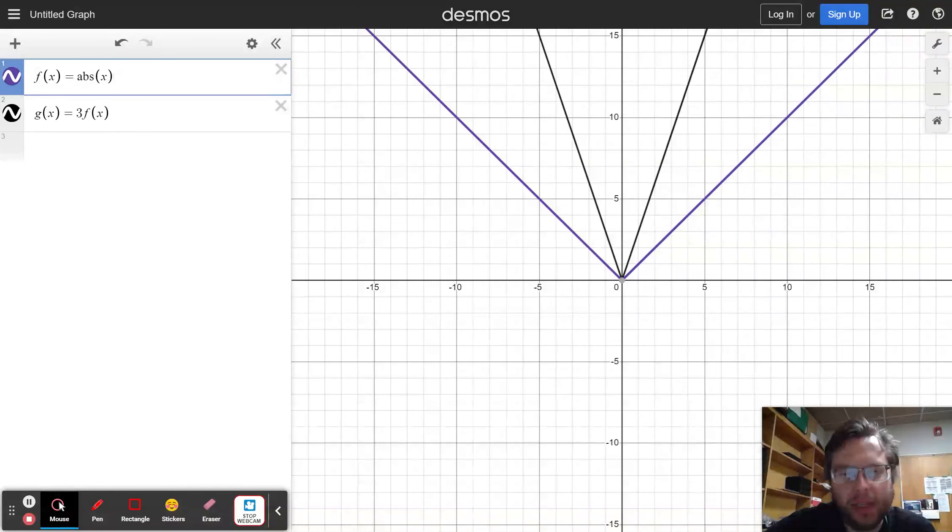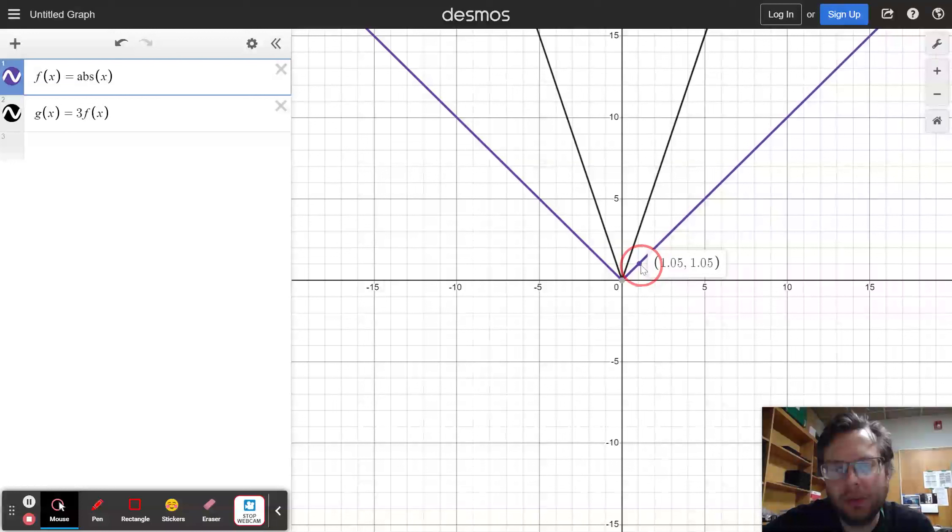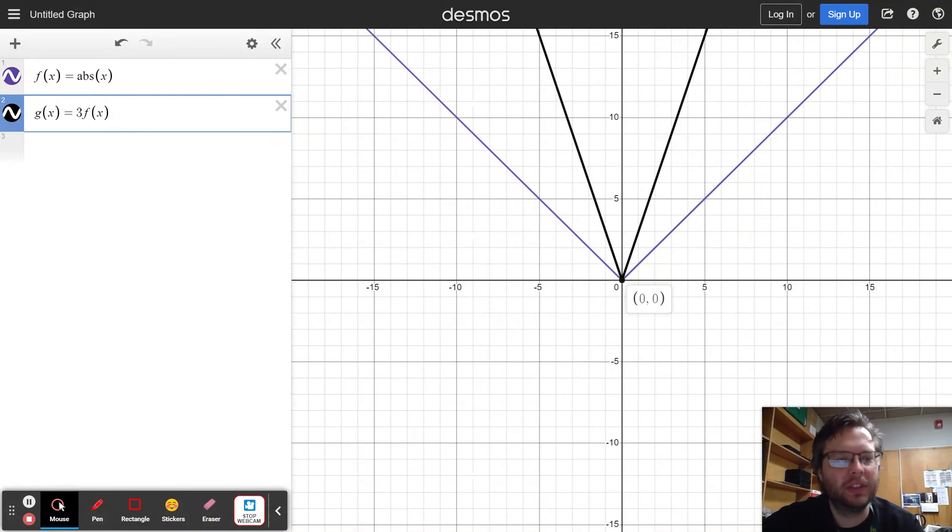Now, look at the black graph compared to the purple graph. What I can see is that at any given point on the purple graph, like this one is negative 5, 5, there is a buddy point that is 3 times taller on the black graph, negative 5, 15. Over here, when x is equal to positive 1, just as a random example, when x is equal to positive 1, the purple graph is at positive 1, the black graph is 3 times taller. Both of them have an origin point of 0, 0.